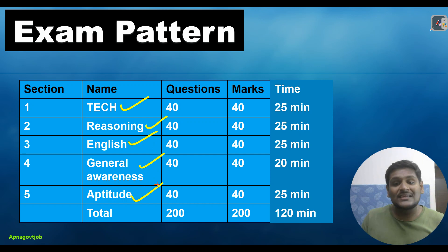From each section, you will get 40 questions - 40 from technical, 40 from reasoning, 40 from English, 40 from general awareness, and 40 from aptitude. So the total is 200 questions.